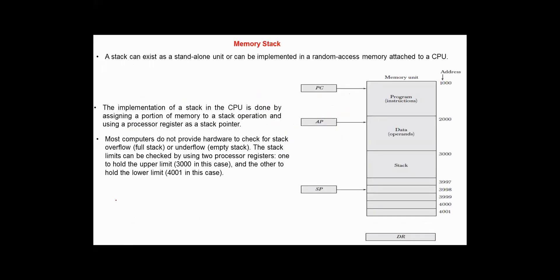A stack can exist as a standalone unit or can be implemented in random access memory attached to the CPU. The implementation of the stack in the CPU is done by assigning a portion of memory to a stack and using a processor register as a stack pointer. If this scenario is used, most computers do not check for stack overflow. The stack limits can be checked by using two registers: the lower and upper bound registers.